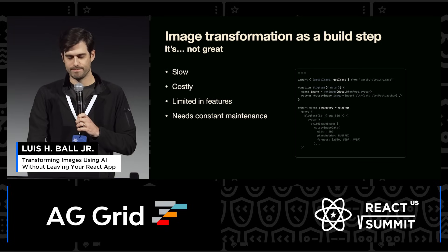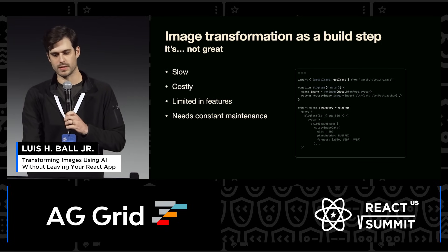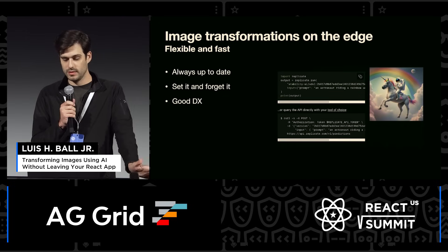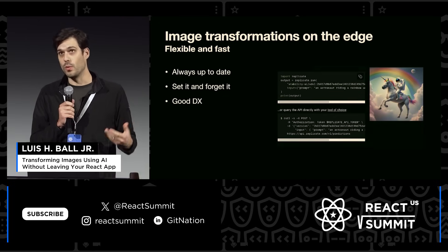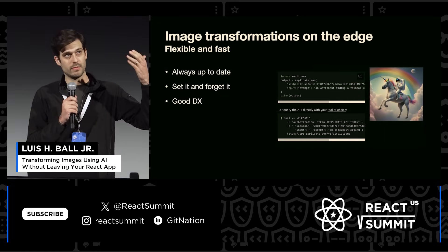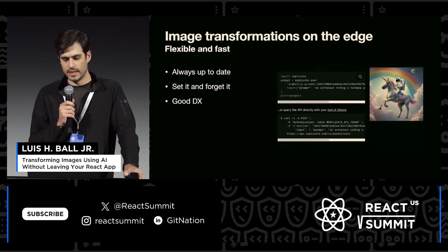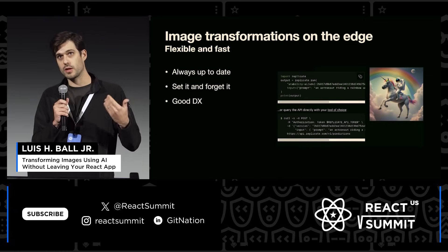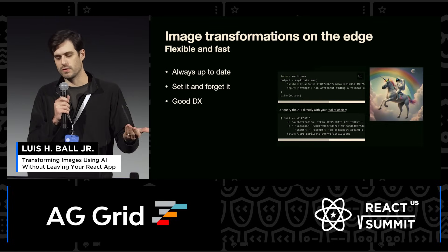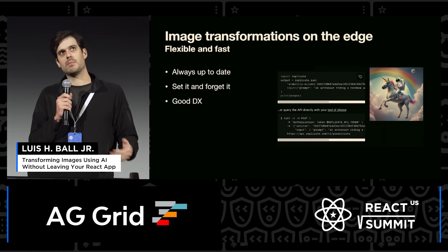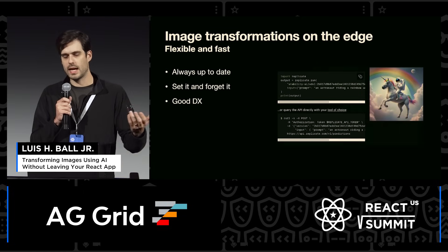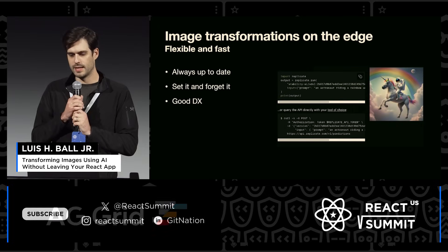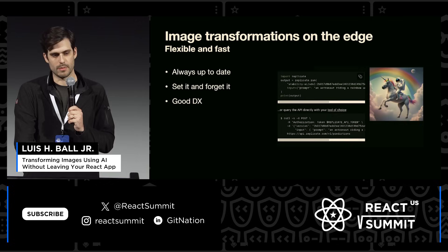The DX, in short, just isn't great. So what else can we do? We can do image transformation on the edge. This is fast and easy to integrate into any application. It's always up-to-date — you can spin up a new replicate endpoint pretty easily and it stays up-to-date for you. But it comes with some overhead: you've got to spin up new functions every time you need a new transformation, and you have to do things like maintaining and invalidating caches, syncing the generated asset back to your bucket. It can get a little complicated.